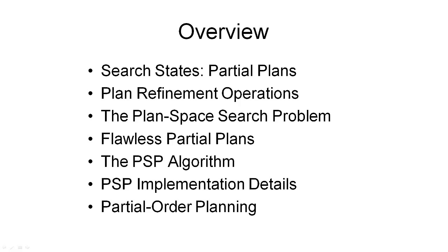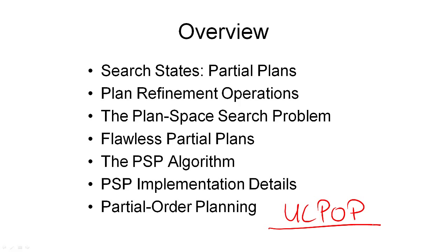Before we finish with plan space search, I want to introduce another refinement to the generic algorithm we've just seen. This is the algorithm as it was implemented in the UC Pop Planner, developed in about the early 90s. In the algorithm as we've seen it so far, it considers two types of flaws: unachieved goals and threats. Every time we go through our main loop, one of these flaws is removed from the plan and potentially others introduced. The UC Pop Planner only considers unachieved goals and deals with threats as part of the main loop.